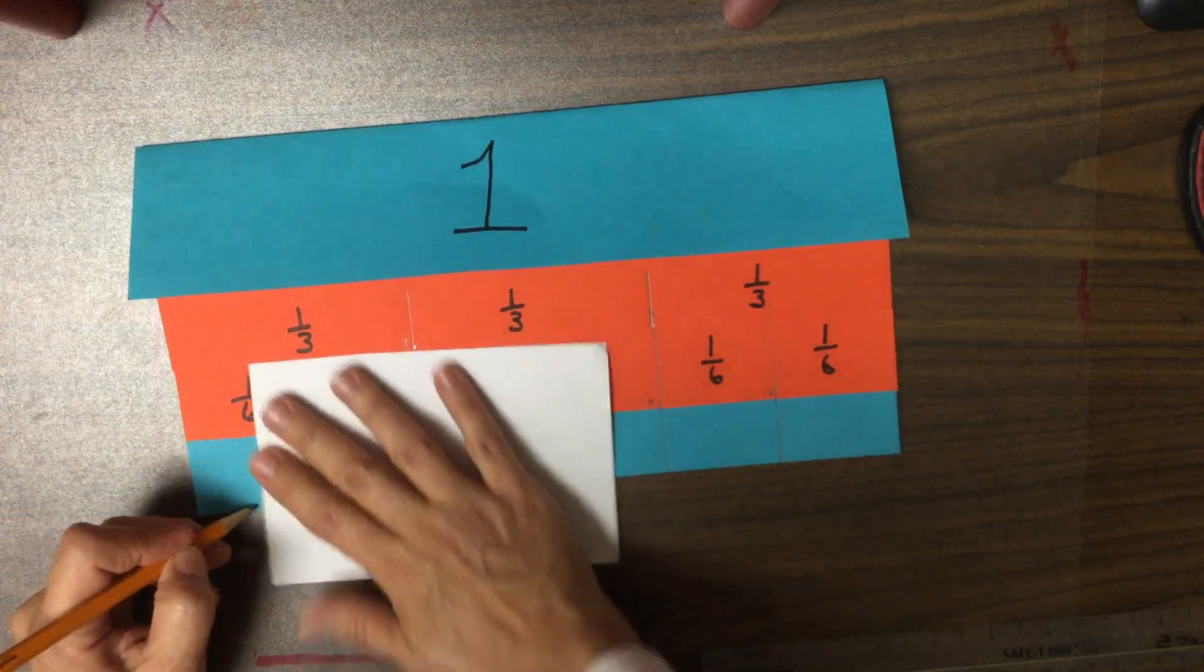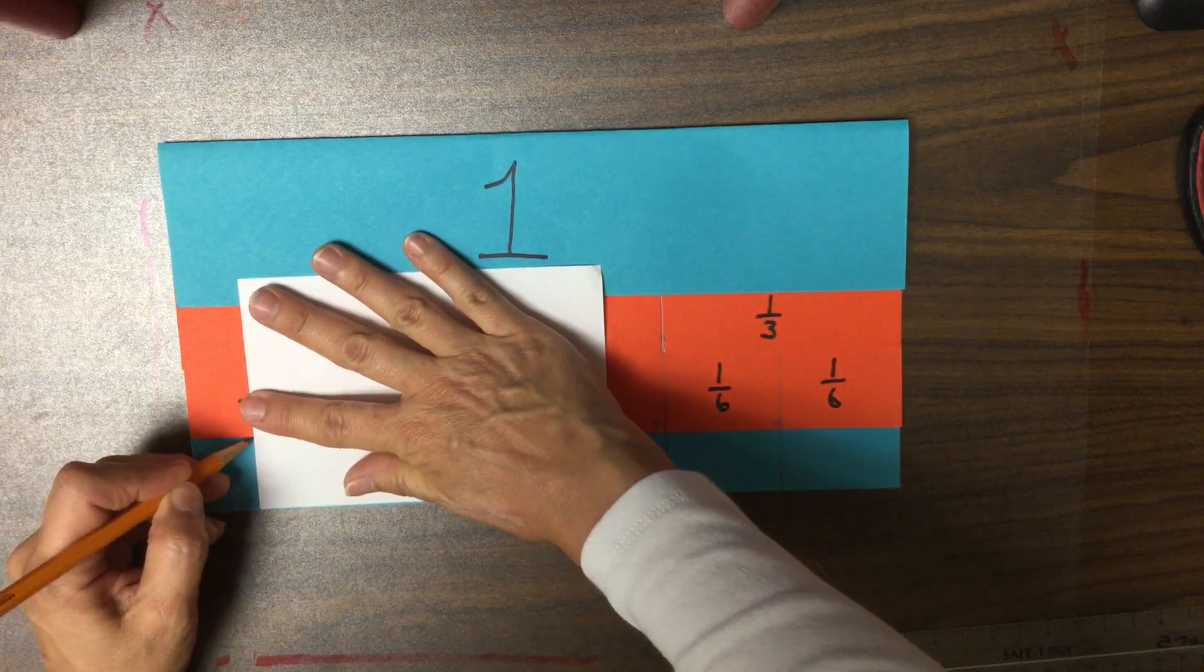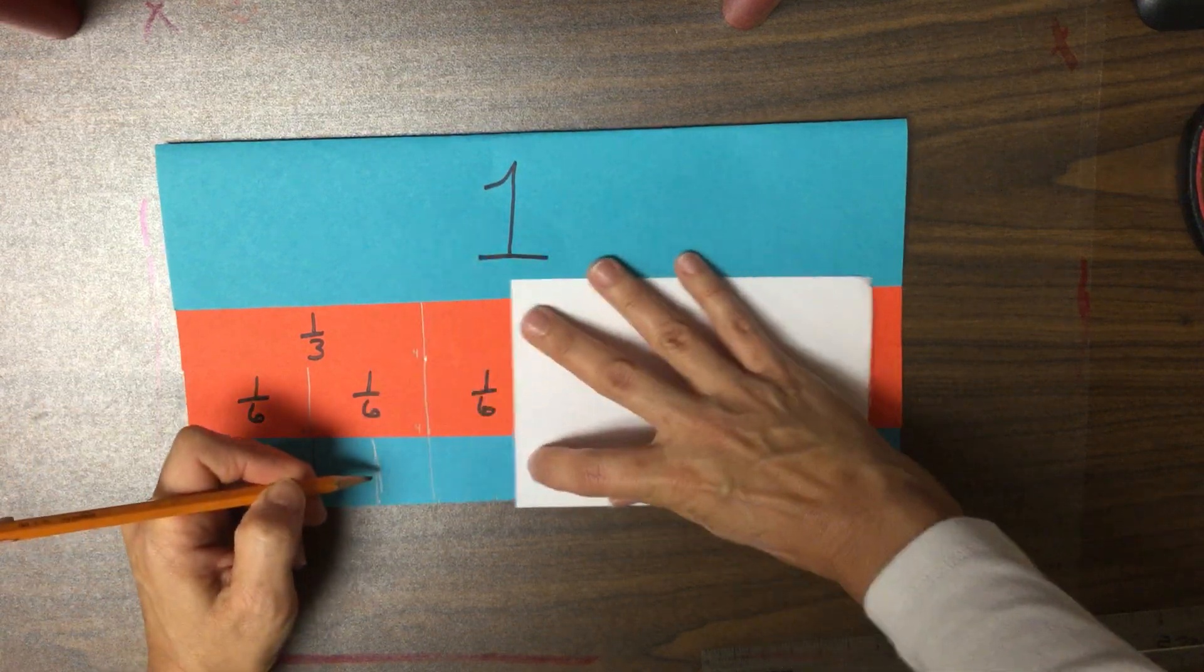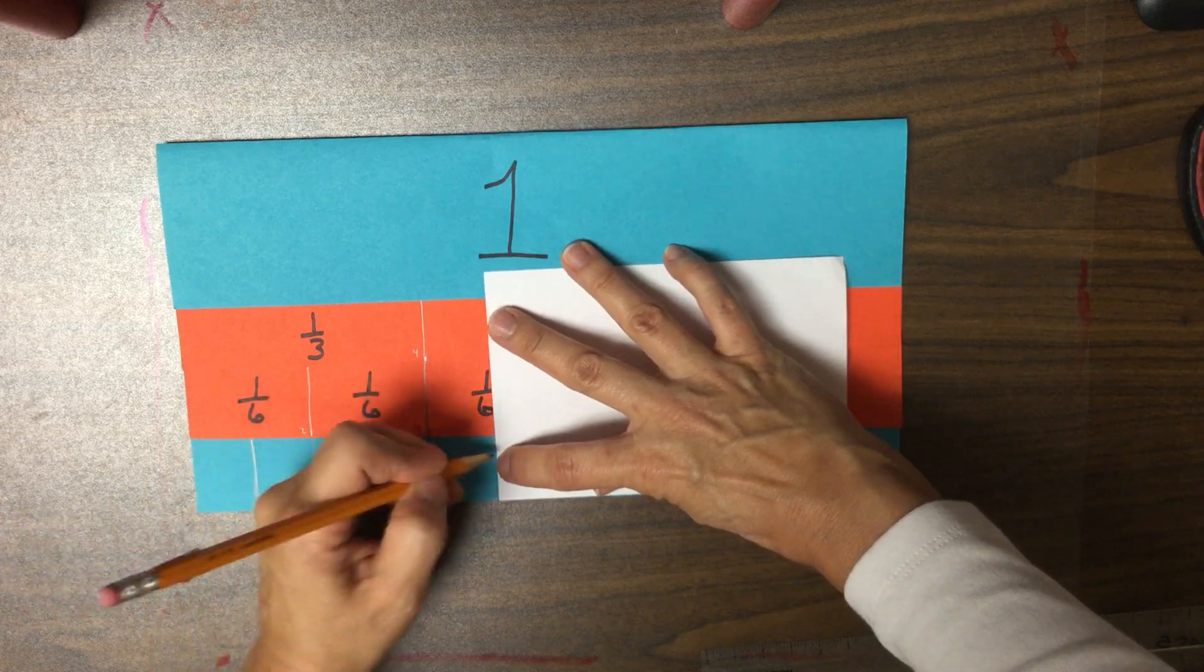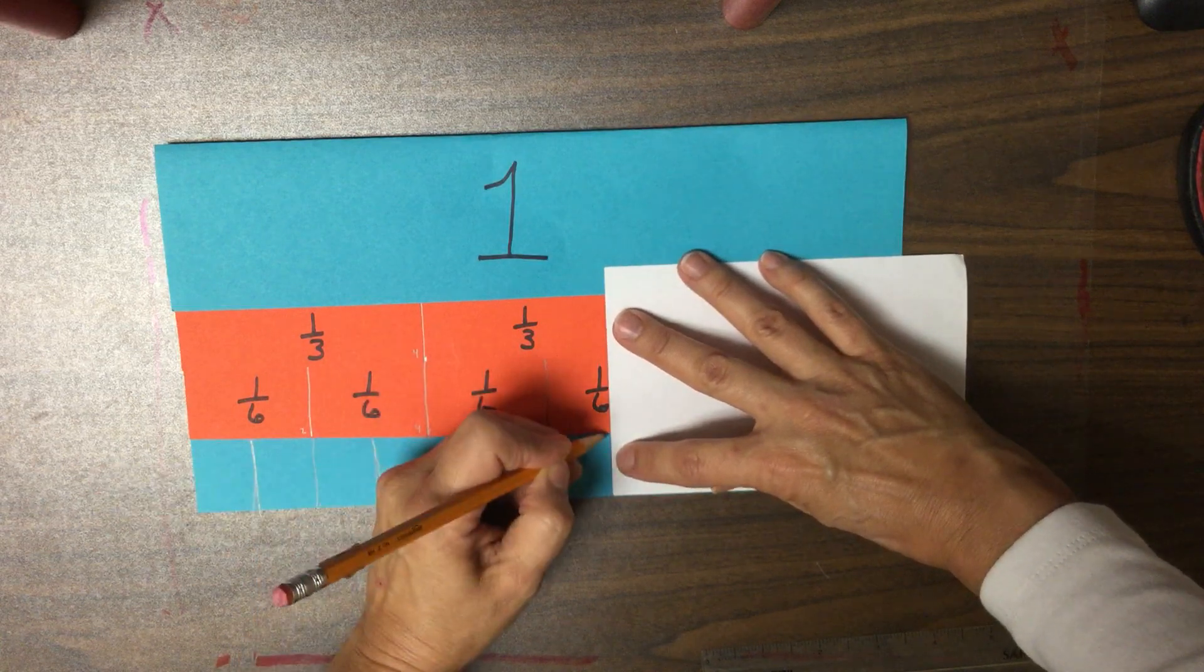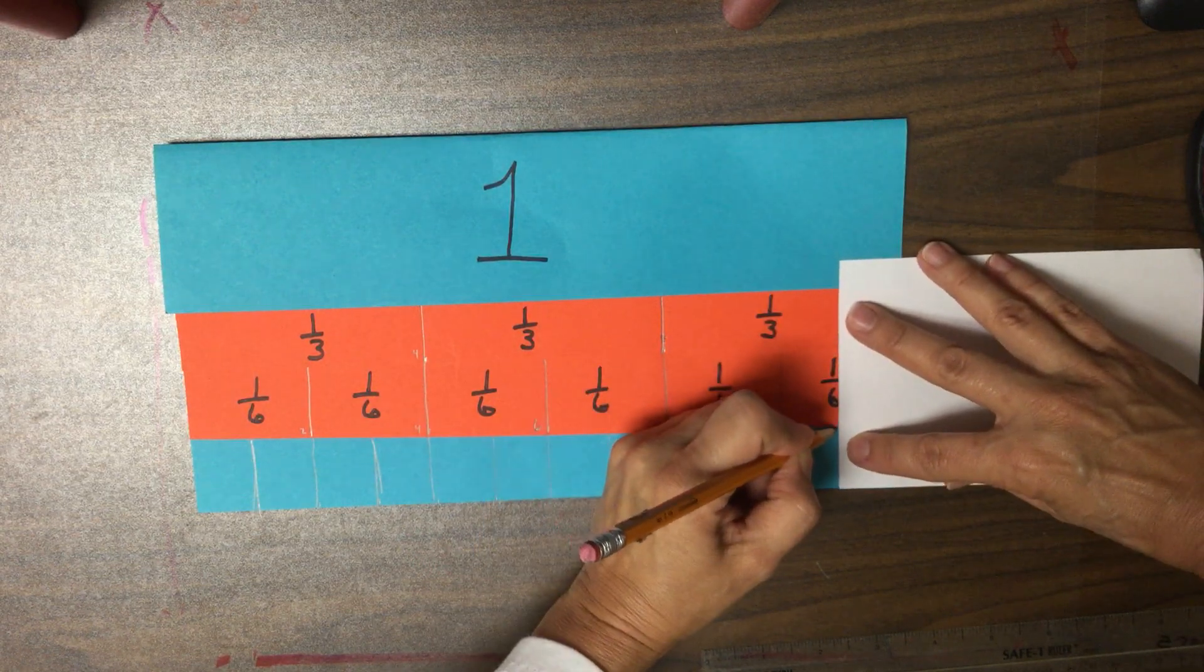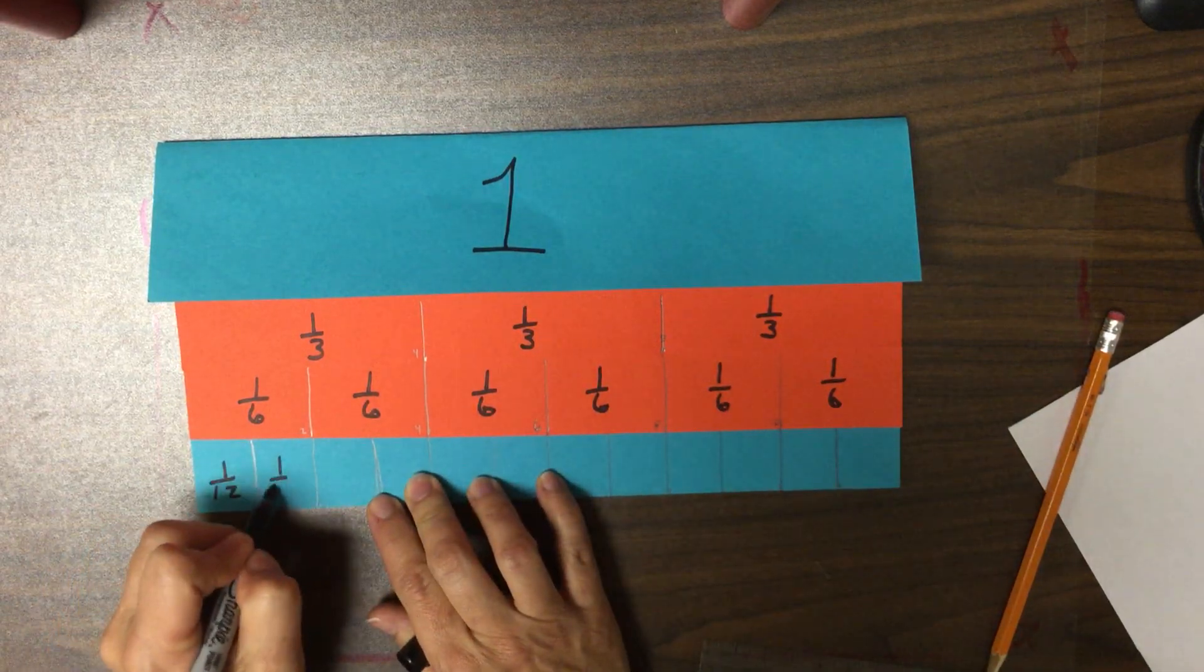And ten. And now you can draw the ones in between, and again, so that they're straight. Match that edge. And once you have done all of these lines, what are we going to do next? That's right. We're going to get our scissors, and we are going to cut each, no, we've got to label them first, and then we will cut them. So, there's 12 equal parts. So, each one is one twelfth.